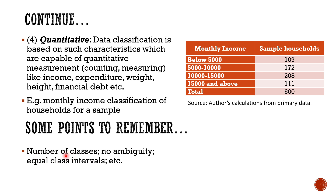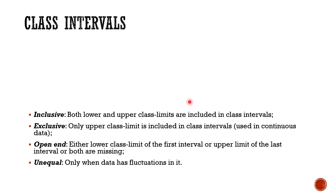There are important points to remember when classifying data. First, be very careful when choosing the number of classes. Second, there should be no ambiguity or overlapping — if we have 'below 5,000' and '5,000 to 10,000', the classification must be clear with no overlap. Third, and most importantly, we should have equal class intervals as much as possible, such as intervals of 5,000 throughout.